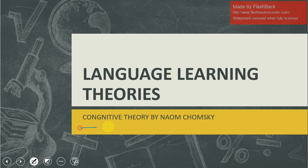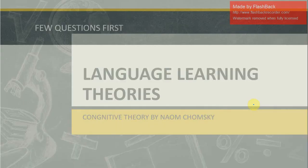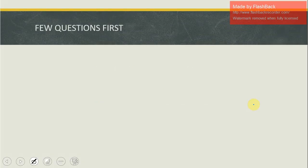If we get to know how the first language is acquired, it would be beneficial in our learning of second languages. There are multiple points of view about how language is learned by human beings. Today we are going to talk about language learning theories, and the first theory we are going to deal with is cognitive theory by Noam Chomsky.